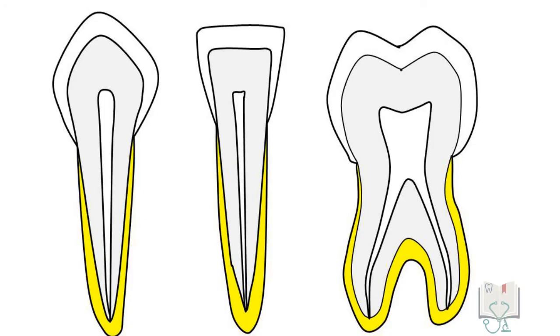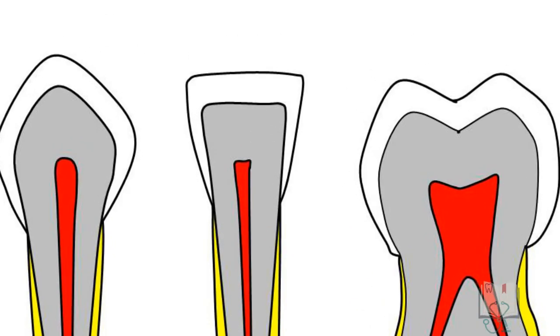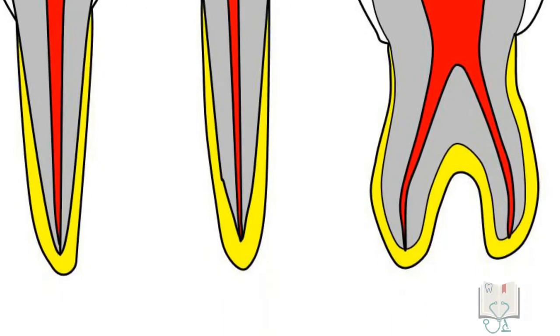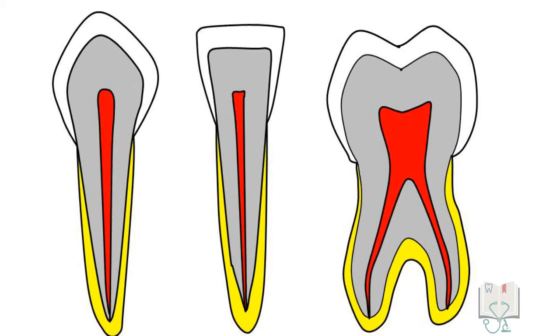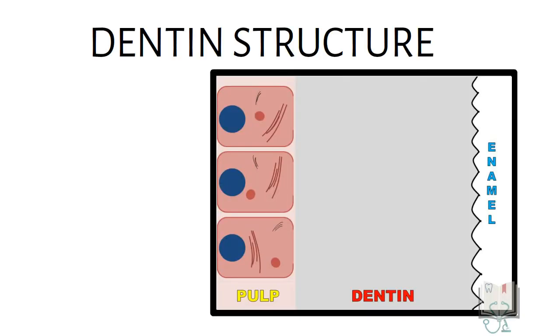Dentine is the calcified tissue which forms the bulk of the tooth and has pulp in its center. In the crown it is surrounded by enamel and in the root it is surrounded by cementum. It is formed by odontoblasts present in the pulp but have odontoblastic processes running through the thickness of dentine. This morphology divides the dentine into few parts.